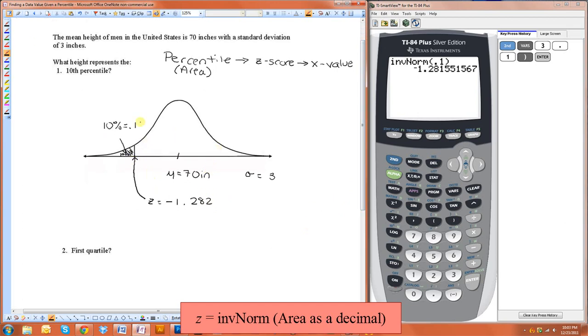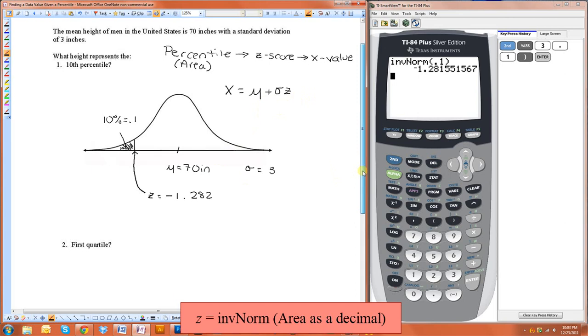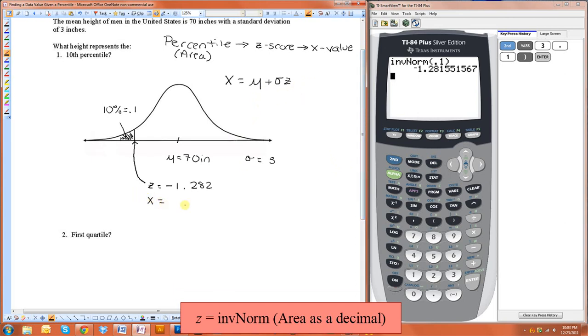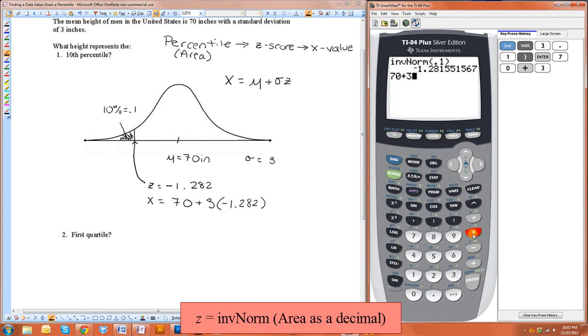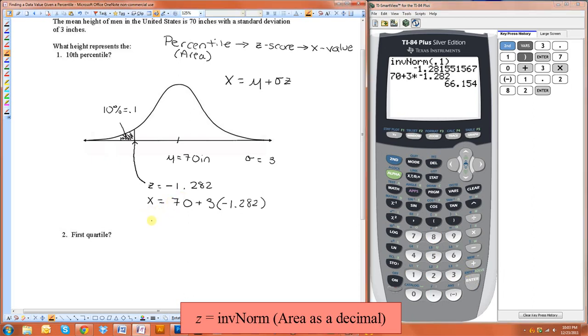We're going to use the formula that x is equal to μ plus σ times z, or z times σ. So x equals—μ in this case is 70, σ is 3, and z is negative 1.282. We just do 70 plus 3 times negative 1.282, so x is equal to 66.154 inches.